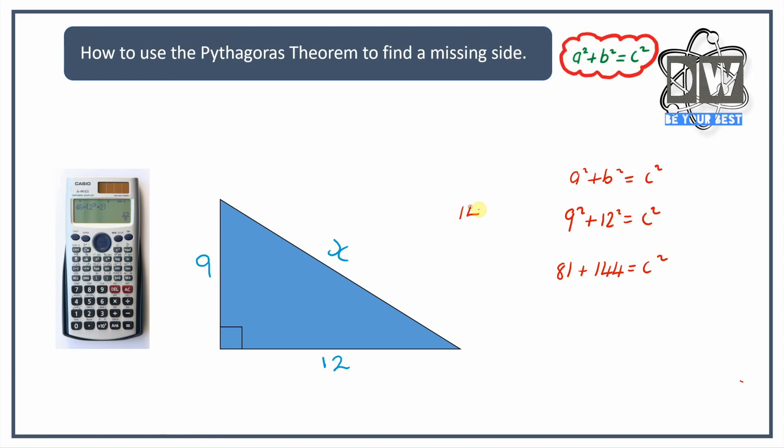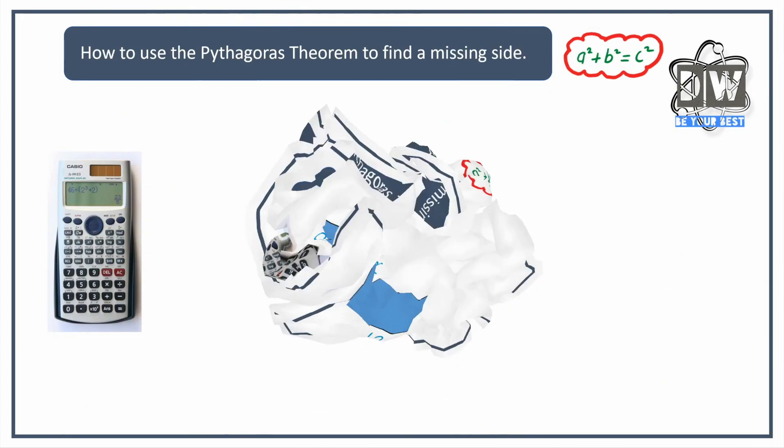Get your calculators out if you want to. 144 add 81, so we've got 5, we've got 12, and we've got 2, so we've got 225 equals c squared. We square root and square root. We need to use our calculator for this one. The square root of 225 is 15, so c equals 15, and we can replace that with x equals 15.